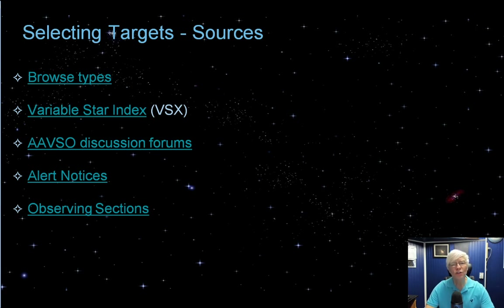So what should you observe? With over 200 kinds to choose from, the trick is to ask yourself what types of variables you want to observe. Experienced variable star astronomers over the decades have found that you will be drawn to your favorites once you get to understand how they vary.